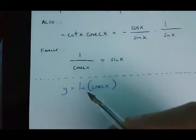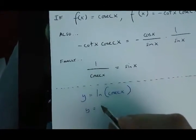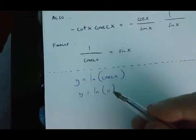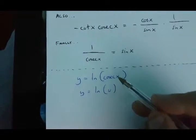Now, to differentiate this, I'm first going to say that y is equal to ln u. And in this case, u is going to be equal to cosec x.